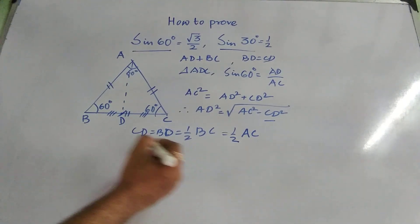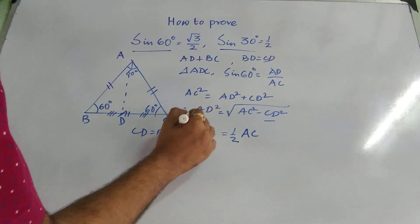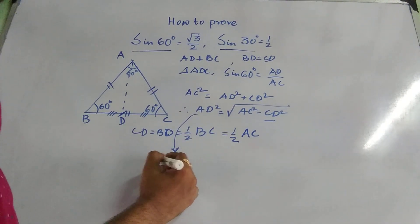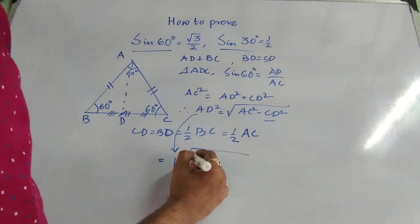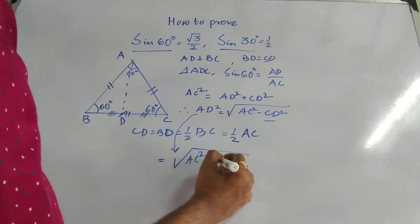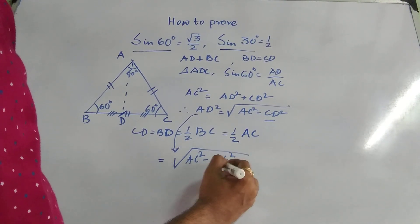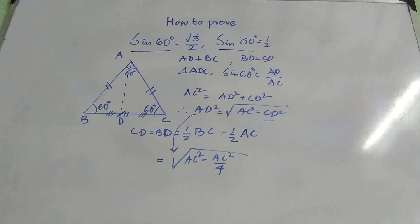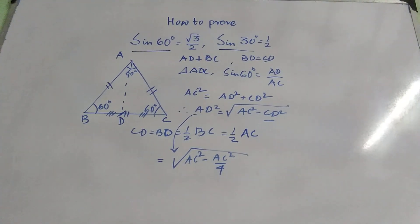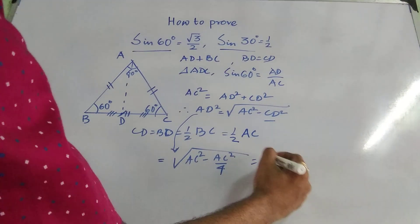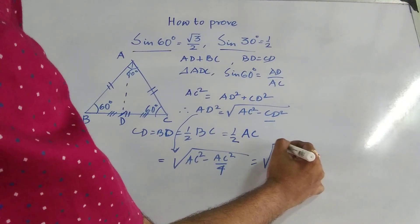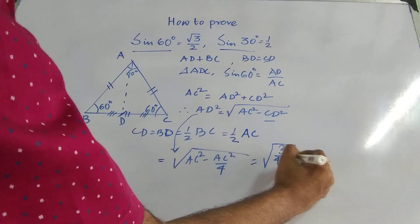So if I, from this formula, if I try to write this way, which is nothing but square root of AC square minus AC by 2 whole square, that means AC square by 4, which is equal to AD square.